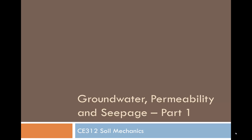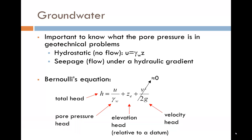This section is about groundwater permeability and the seepage of water through soil. By now you will appreciate that it is important to know what the pore pressure is in geotechnical problems. In the hydrostatic case, that is with no flow, u is just gamma w times the depth z below the water table. However, we are also interested in the case where water is seeping through the ground or flowing under a hydraulic gradient.